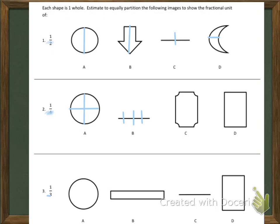Let's move on to three. This bottom number tells us we're going to split it up into three equal parts. I find a third is a little bit tricky. So we have just about three equal parts.